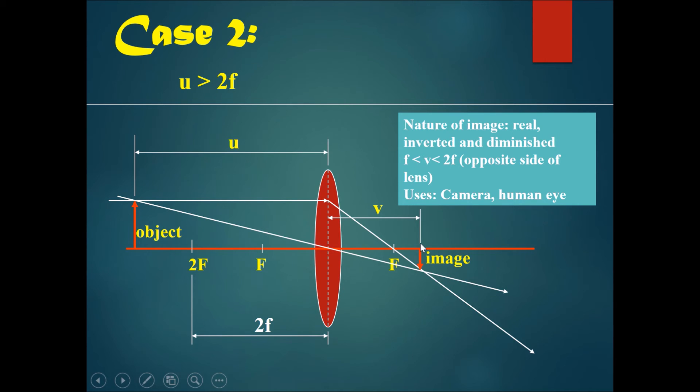And the location of the image will be between f and 2f, or between the focal point and two times the focal point, somewhere in between there, and it will be on the opposite side of the lens as the object.